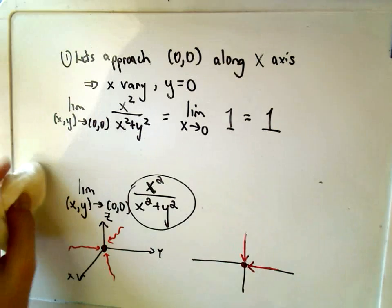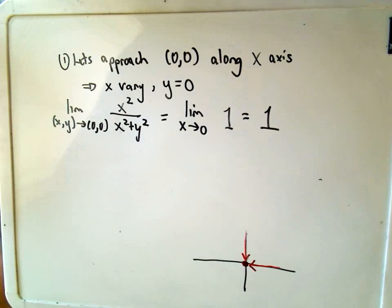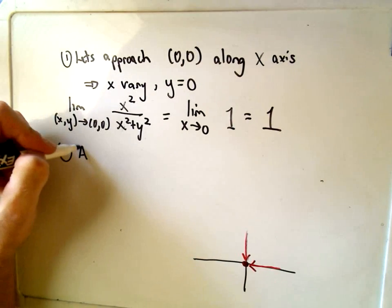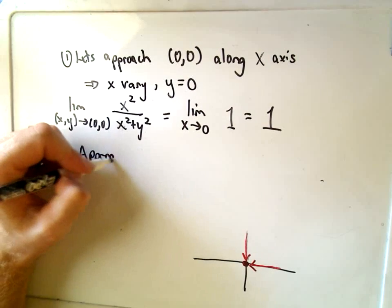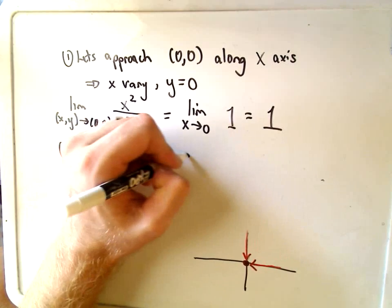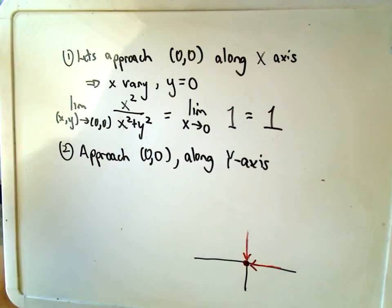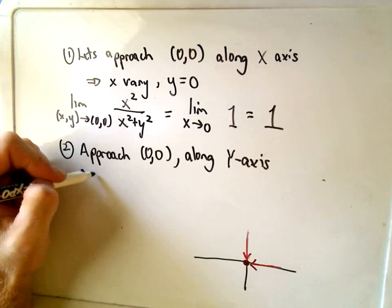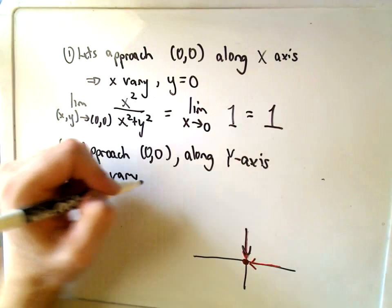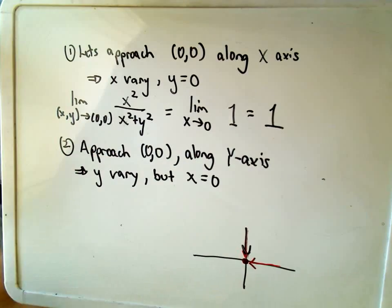Okay, so we've approached from one direction. Let's maybe pick a different direction. Maybe let's approach along, so we'll approach this point 0, 0. But maybe let's do it along the y-axis. Well, obviously, again, if we go along the y-axis now, the y will vary. But along the y-axis, we know that x equals 0.